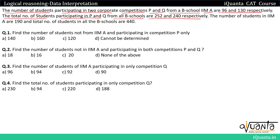The number of students in IMA is 190, and the total number of students in all the B schools is 440, including IMA as well.